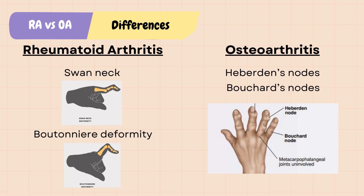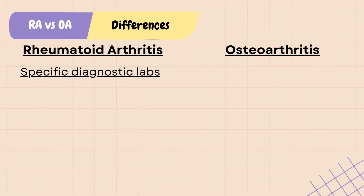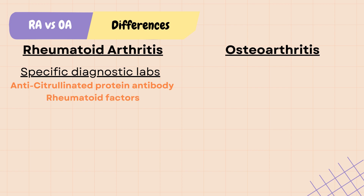Those with RA also have systemic symptoms such as fatigue, anorexia, and weight loss due to inflammation. For diagnosis, there are RA-specific labs such as anti-citrullinated protein antibody and rheumatoid factors to help with diagnosing RA, while there are no specific labs for OA because it is not a systemic disease.